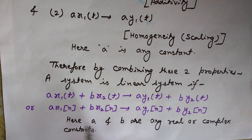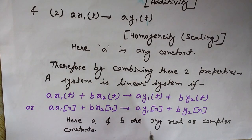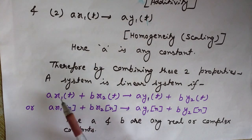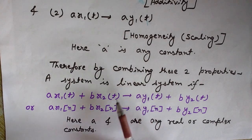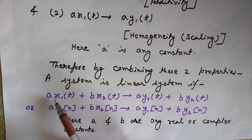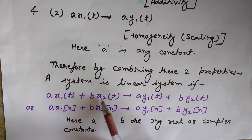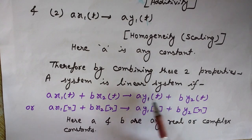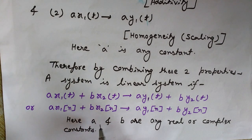Similarly, for a discrete time domain, ax1[n] plus bx2[n] gives us a·y1[n] plus b·y2[n]. The benefit of this superposition property of linear systems is that if we know the output to some inputs — for x1(t) we have y1(t), and for x2(t) we have y2(t) — then if we scale and add these inputs, that is additivity and homogeneity, we need not find the output separately. We can simply add and scale the outputs and get the output of the combined input. Here, a and b are any real or complex constants.